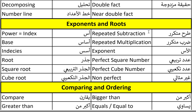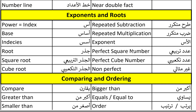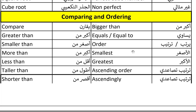Repeated subtraction. Repeated subtraction. Repeated multiplication. Repeated multiplication. Exponent. Exponent. Perfect square number. Perfect square number. Perfect cube number. Perfect cube number. Non-perfect. Non-perfect. Excellent guys, so let's continue with comparing and ordering.